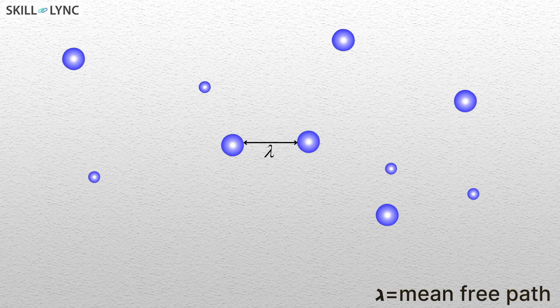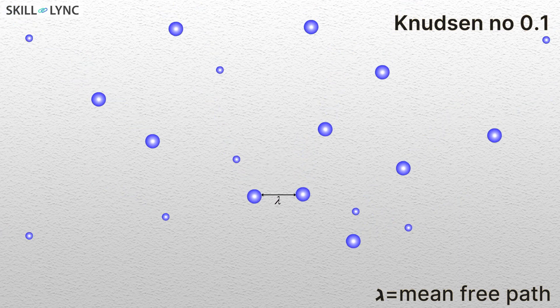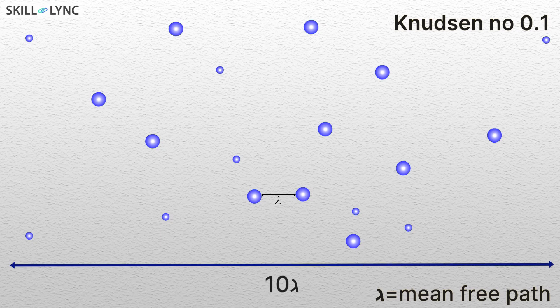Knudsen number compares the mean free path of the molecules against the characteristic length of the system. If Knudsen number is 0.1 it means that our engineering domain is just about 10 times bigger than the mean free path. Mean free path is basically the distance that a molecule can actually travel before hitting another molecule.